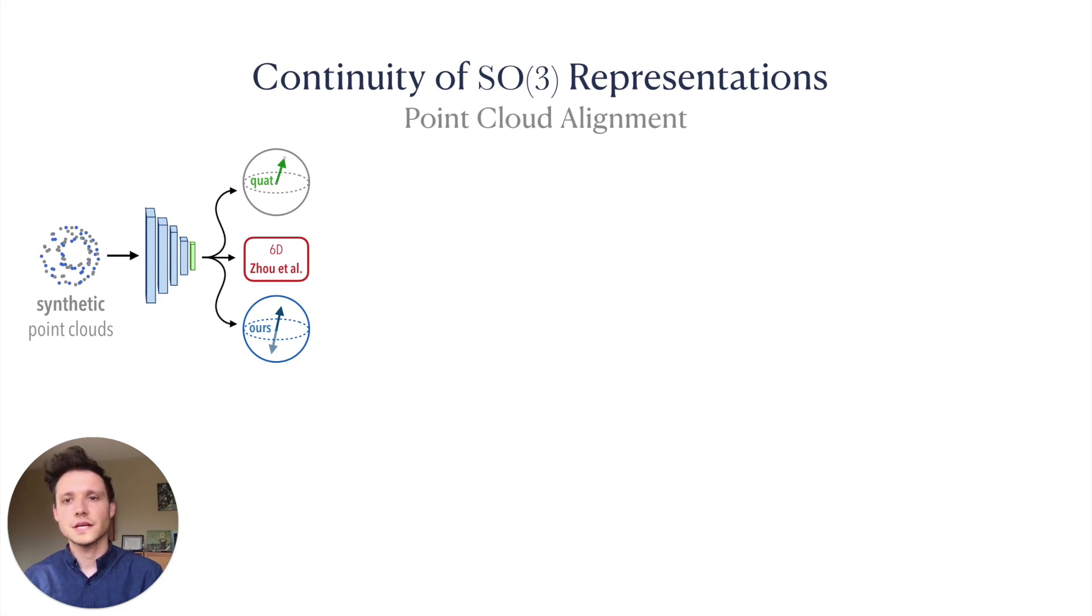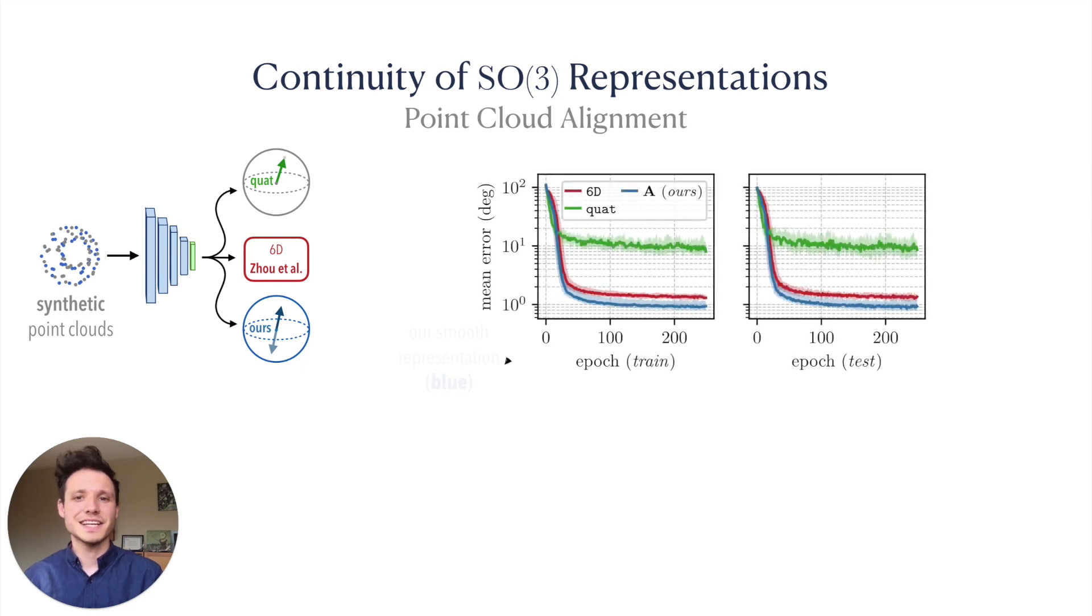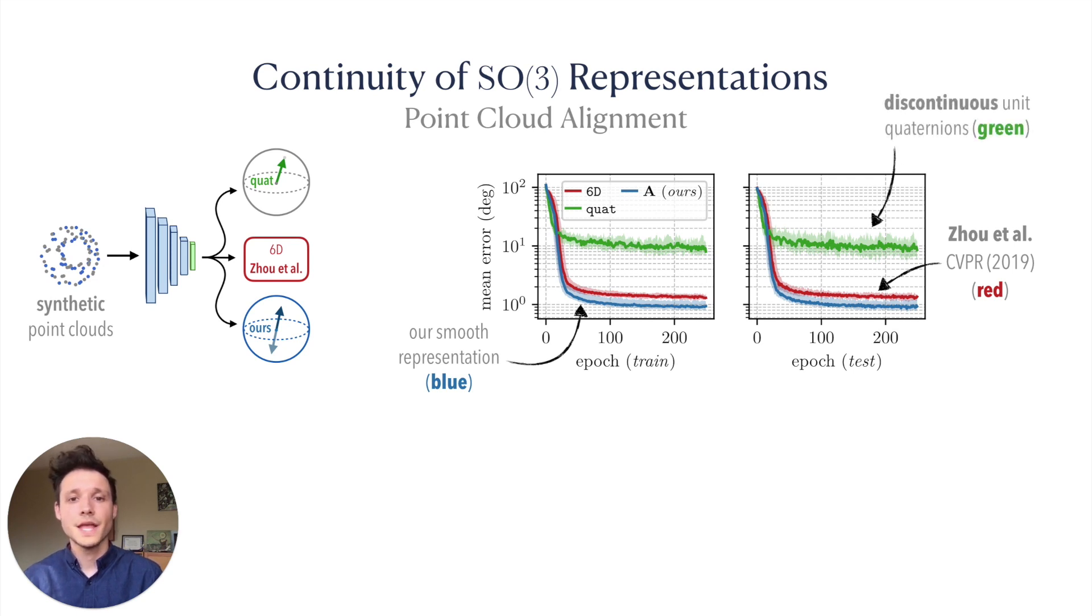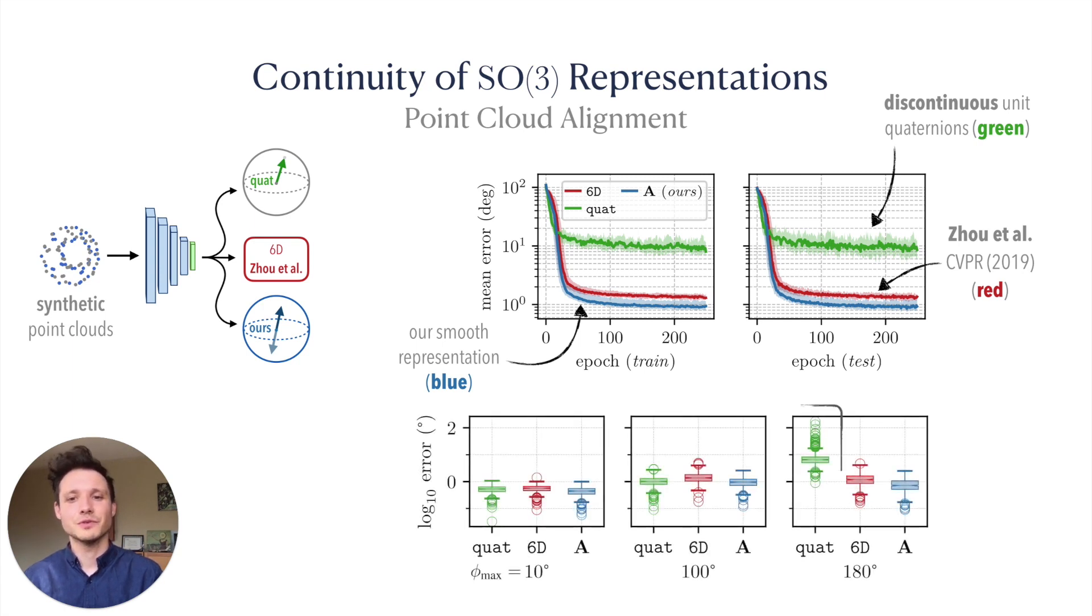To validate the hypothesis that continuity matters for learning, we trained a network to estimate the alignment between synthetic point clouds. Our findings indicate that our representation, shown here in blue, performs comparably to the continuous representation proposed by Zhou et al., and both significantly outperformed the discontinuous unit quaternion formulation, especially when rotations with magnitudes close to 180 degrees are included in training and test data.